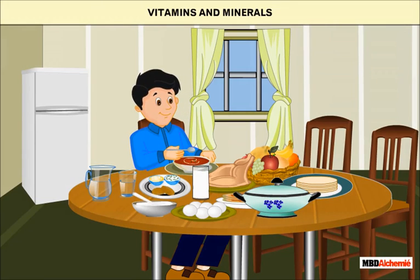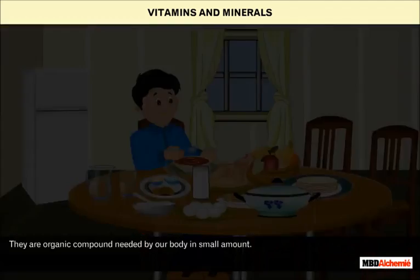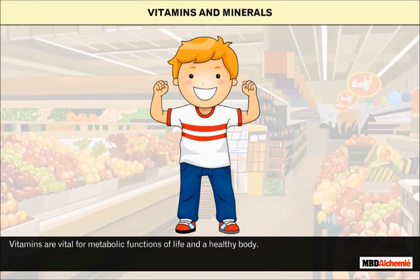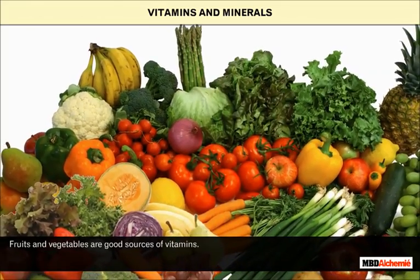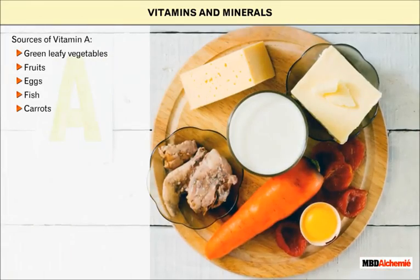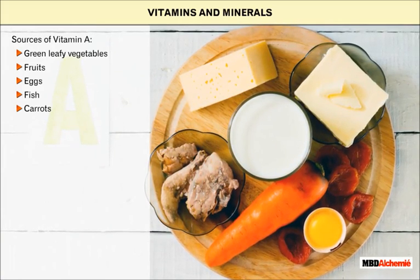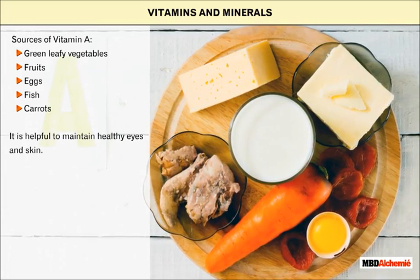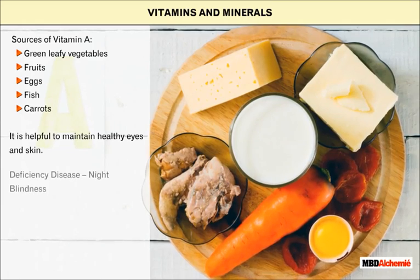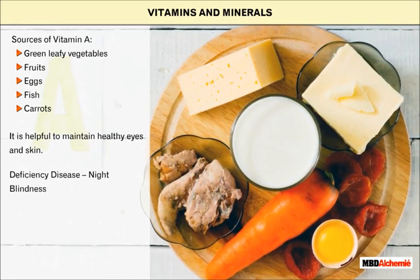Vitamins and minerals are organic compounds needed by our body in small amounts. Vitamins are vital for metabolic functions of life and a healthy body. Fruits and vegetables are good sources of vitamins. Green leafy vegetables, fruits, eggs, fish, carrots, etc. are good sources of vitamin A. It is helpful to maintain healthy eyes and skin. Deficiency of vitamin A causes eye defects like night blindness.